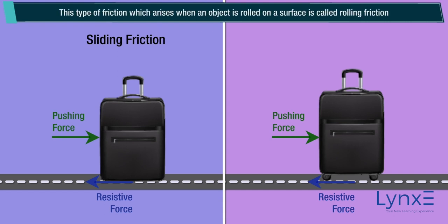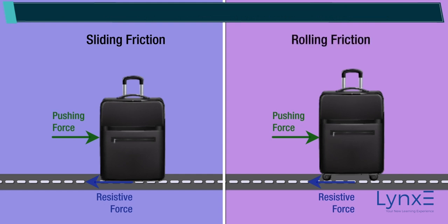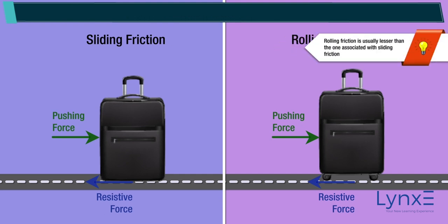This type of friction, which arises when an object is rolled on a surface, is called rolling friction. It is nothing but the force associated with rotational movement. Rolling friction is usually lesser than the force associated with sliding friction.